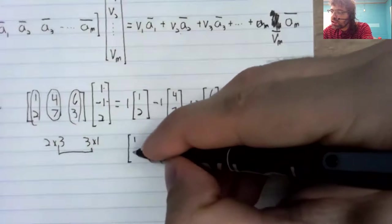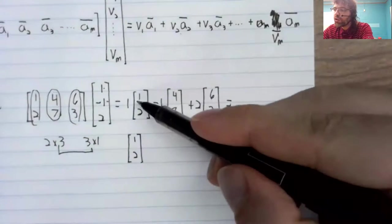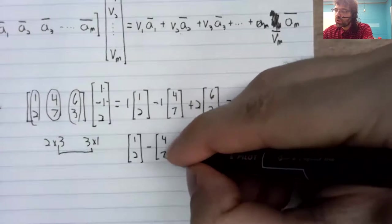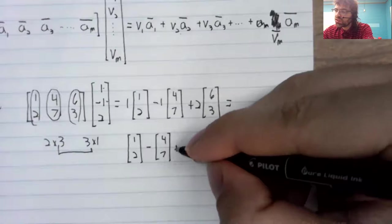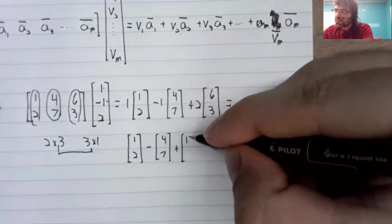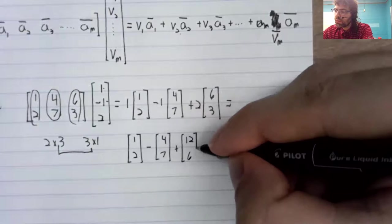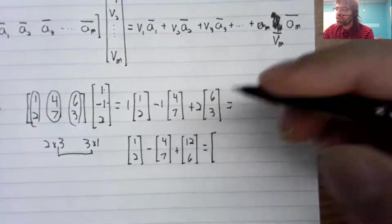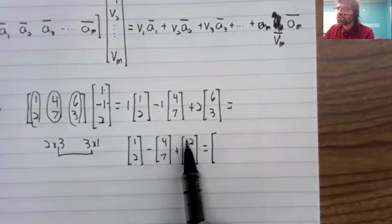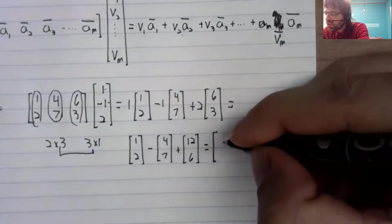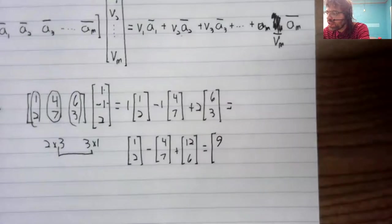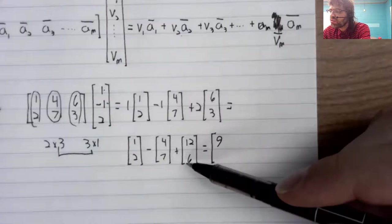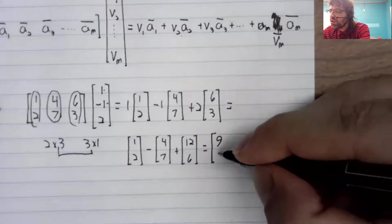Let's try to do this quick. One, two. Minus four, seven. Plus twelve, six. So one minus four plus twelve is nine. Two minus seven plus six is one.